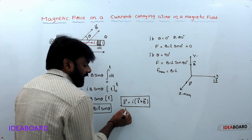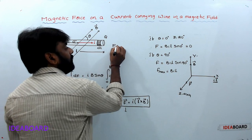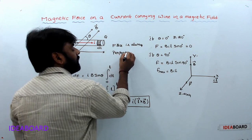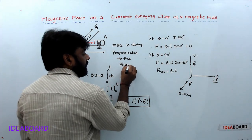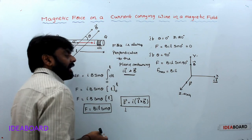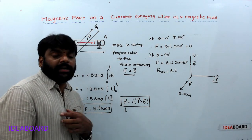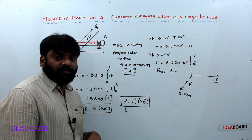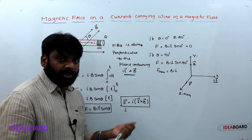The force is always perpendicular to the plane containing I·L and B. The direction of the force can be found using Fleming's left-hand rule, or equivalently the right-hand thumb rule for the cross product.